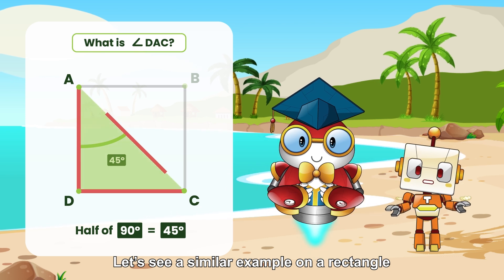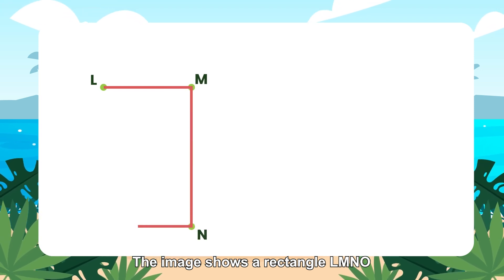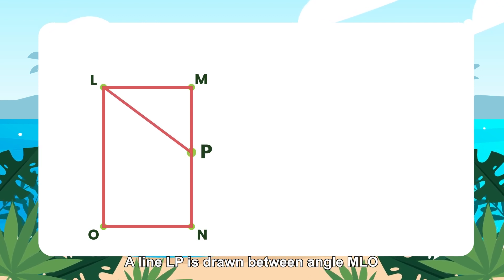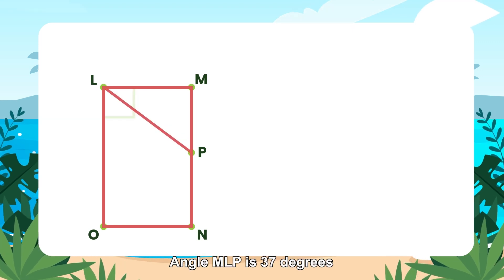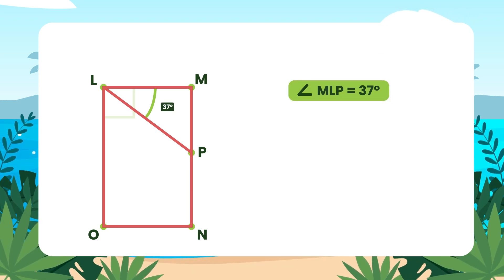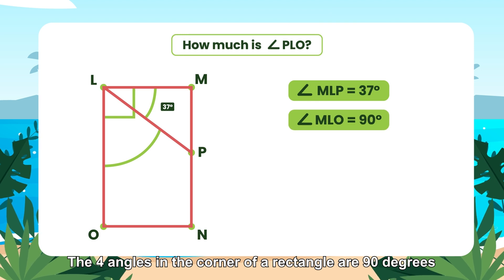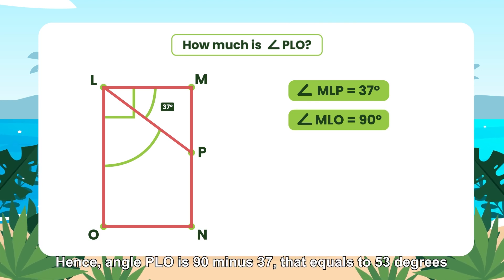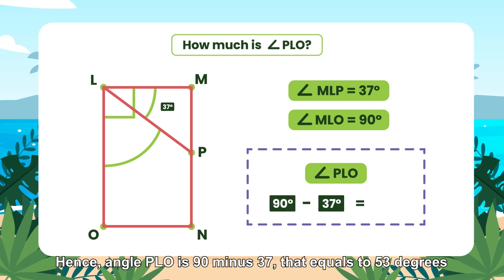Let's see a similar example on a rectangle. The image shows rectangle LMNO. A line LP is drawn between angle MLO. Angle MLP is 37 degrees. How much is angle PLO? The four angles in the corner of a rectangle are 90 degrees. Hence angle PLO is 90 minus 37, which equals 53 degrees.